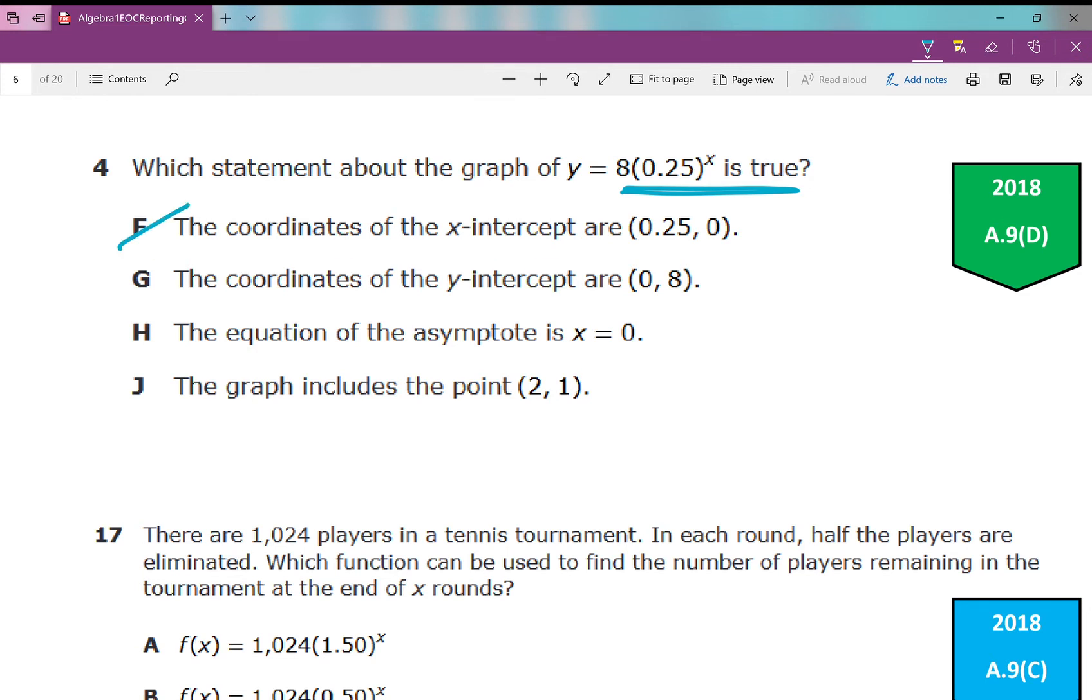Obviously there's not going to be an x-intercept in any exponential function in Algebra 1 in Texas because our graphs in the state of Texas for exponential functions, your asymptote is always going to be y equals 0, which is our x-axis, which means our function will never cross our x-axis, which means we won't have an x-intercept. The second answer choice, the coordinates of the y-intercept are 0, 8. That is correct. Your a value is your y-intercept at your starting point. So your answer is G.